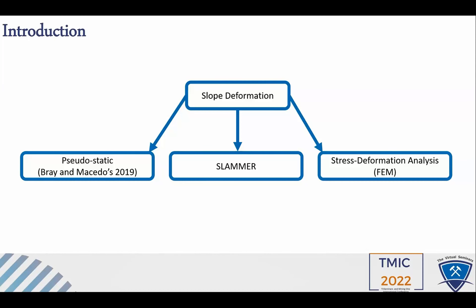You can use SLAMR to estimate deformation based on actual earthquake acceleration time history. The main difference between SLAMR and pseudostatic is that in SLAMR you can use the actual acceleration time history, instead of just the PGA or moment magnitude as in simplified approaches like Bray and Macedo's 2019. The main principle of Newmark time history or SLAMR analysis is that during an earthquake there will be short moments in time when the inertial forces plus the initial static forces exceed the available shear resistance, resulting in temporary loss of stability and unrecoverable deformation.